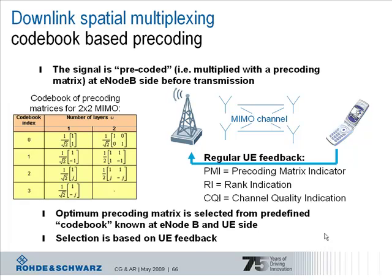So the UE estimates the radio channel and evaluates the quality of the received signal. Based on that the UE recommends the optimum precoding matrix out of the codebook. The codebook is known of course at both the base station and the UE site. And this feedback is called precoding matrix indicator PMI. So the UE is actually pointing to one of these entries.